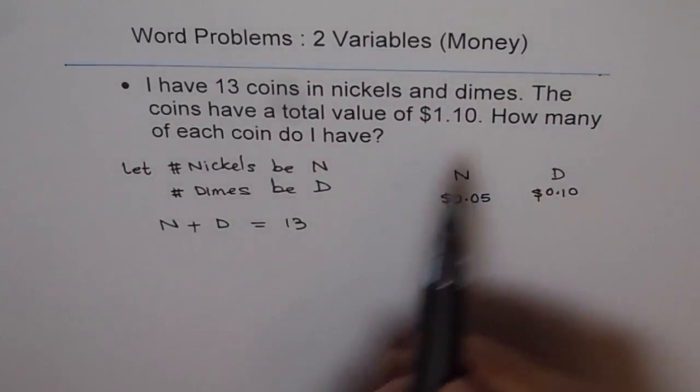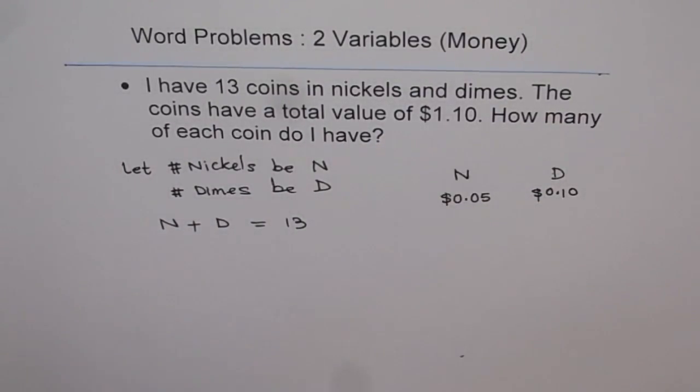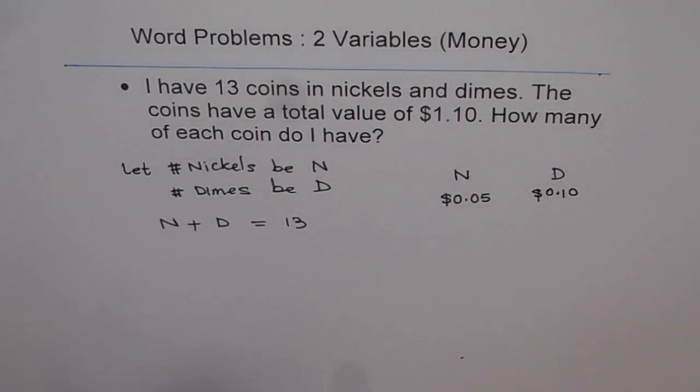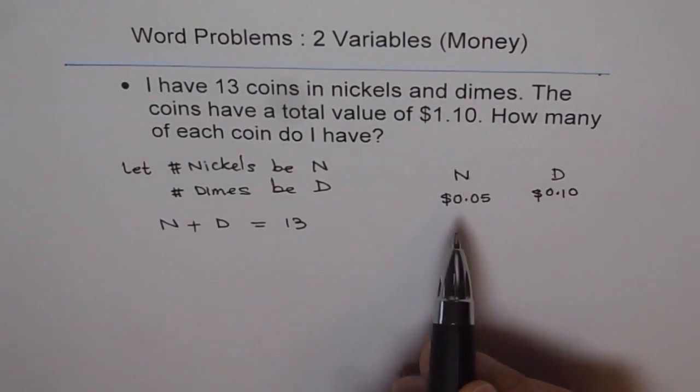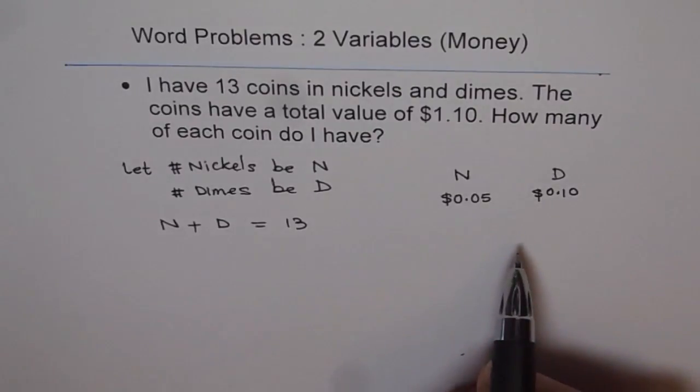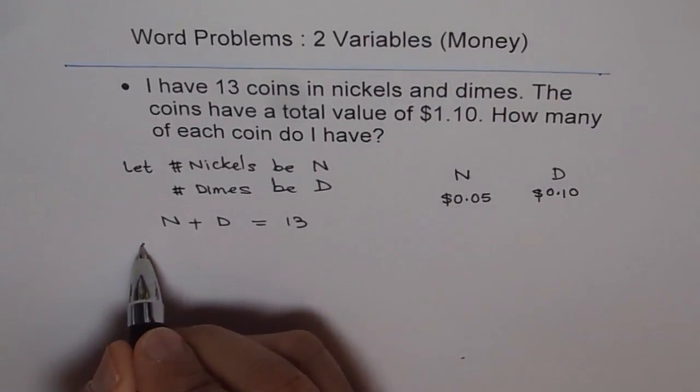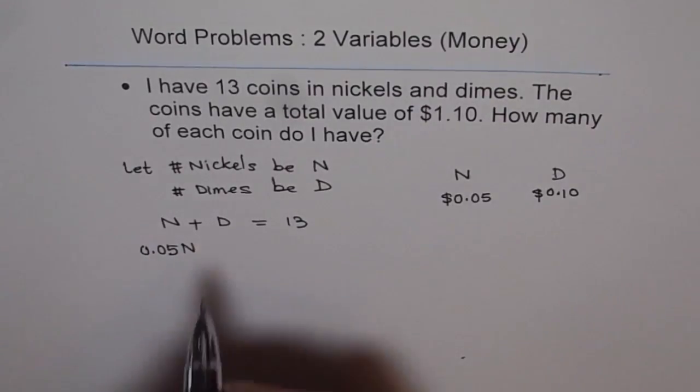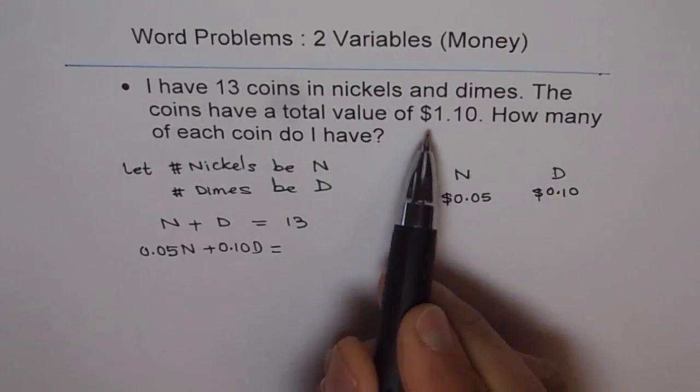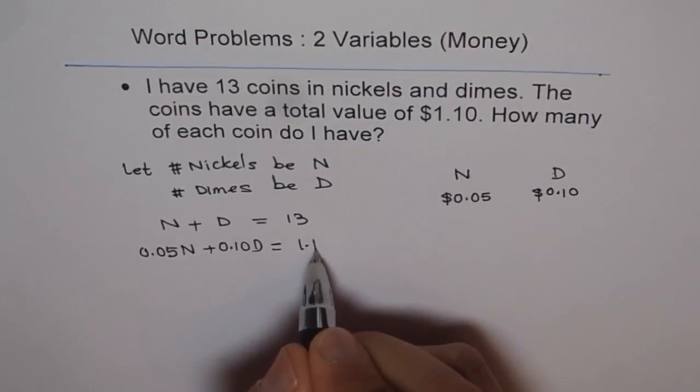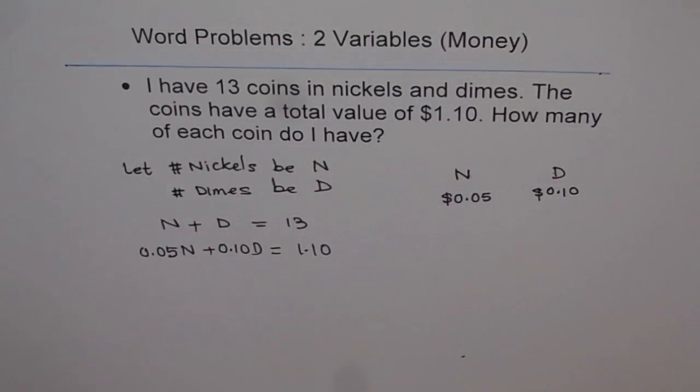The second statement is, the coins have a total value of $1.10. How do you get value from the numbers? You get value from numbers when you multiply them with their respective value. Each nickel is worth $0.05. Each dime is worth $0.10. So if I have n nickels, then the value will be 0.05n. And for dimes, it will be 0.10 times d. And the total value given to us is 1.10. So that is how we get our second equation. It's very important to understand this concept.